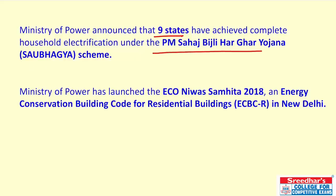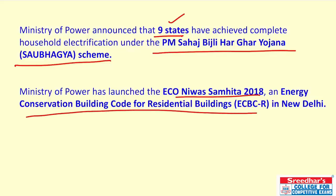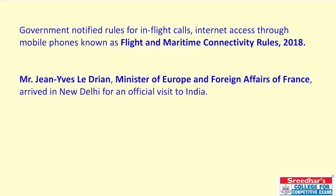Under the Saubhagya scheme, nine states have achieved complete household electrification. The Ministry of Power has also launched the Eco Niwas Samhita 2018 — an Energy Conservation Building Code for residential buildings — in New Delhi. The government has notified rules for in-flight calls and internet access through mobile phones, known as the Flight and Maritime Connectivity Rules 2018.